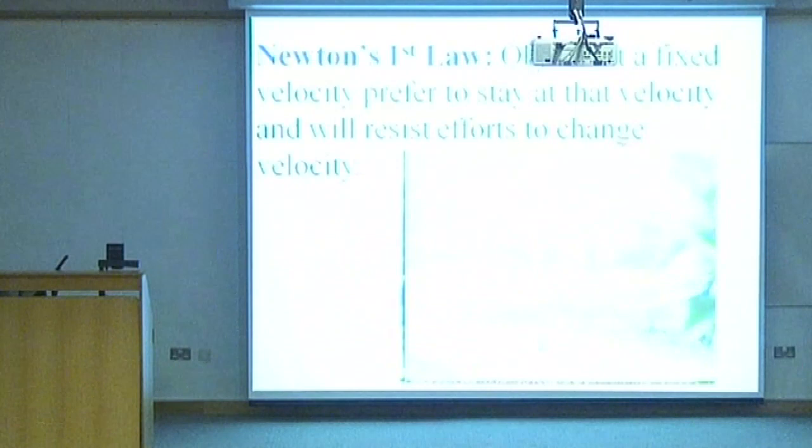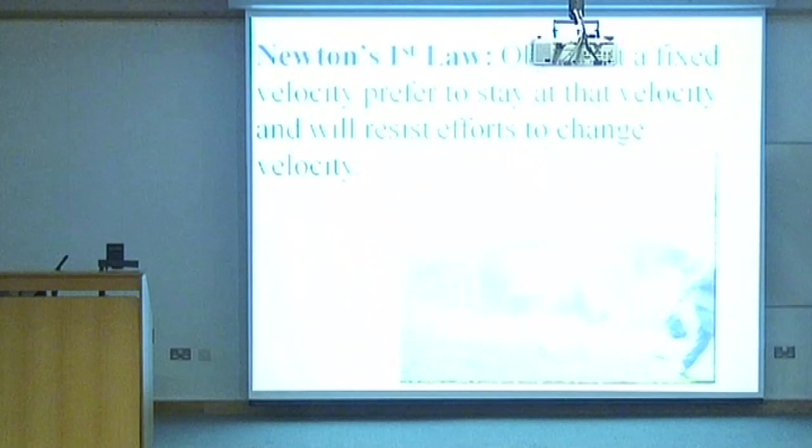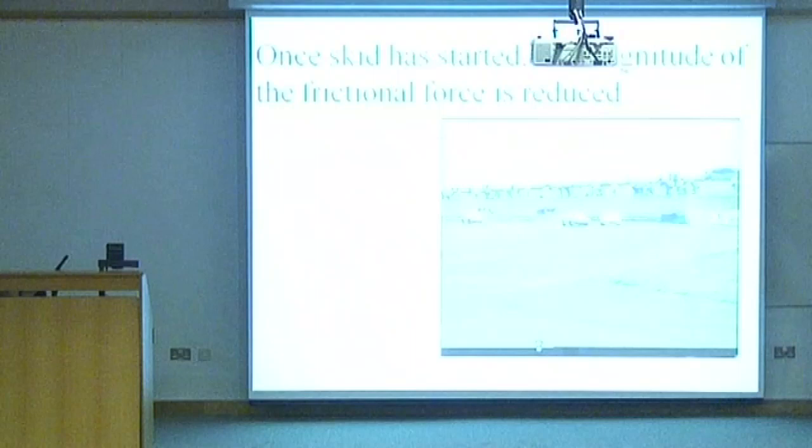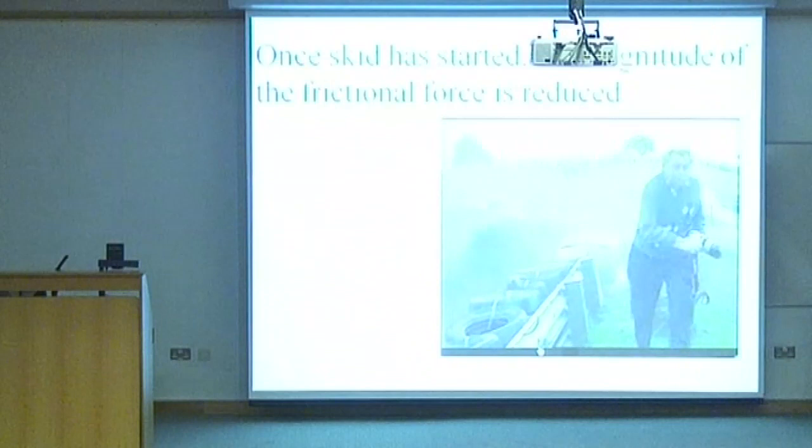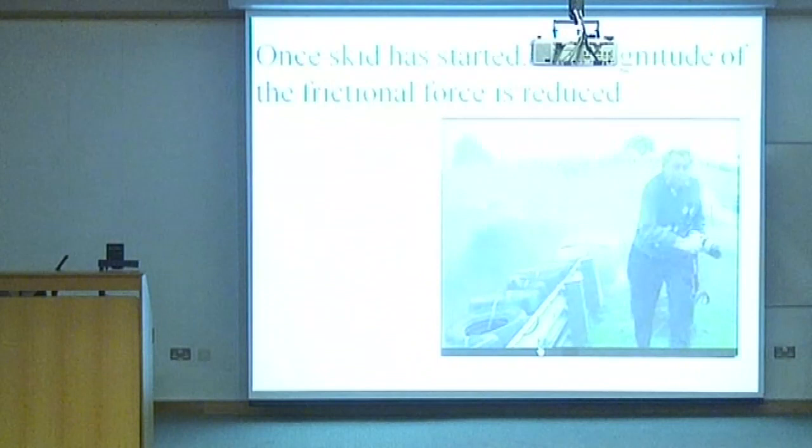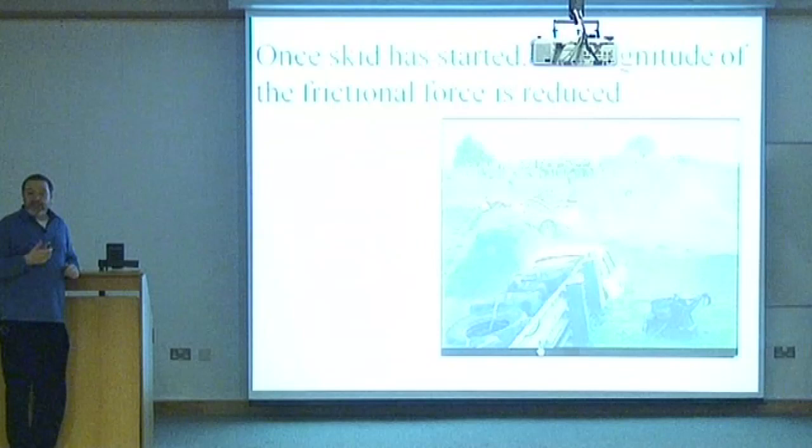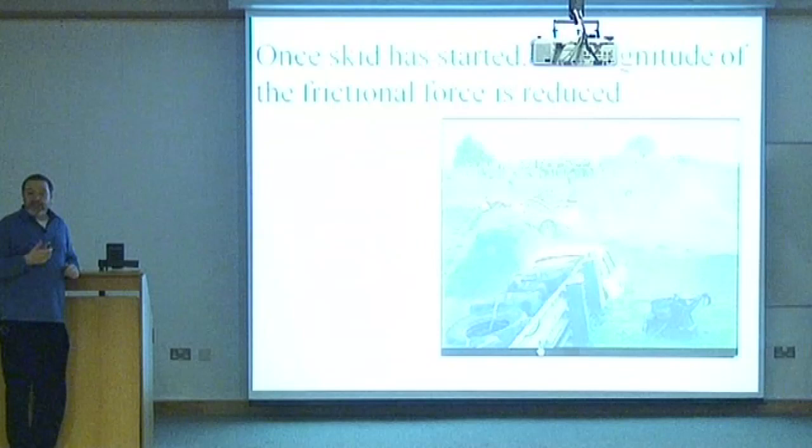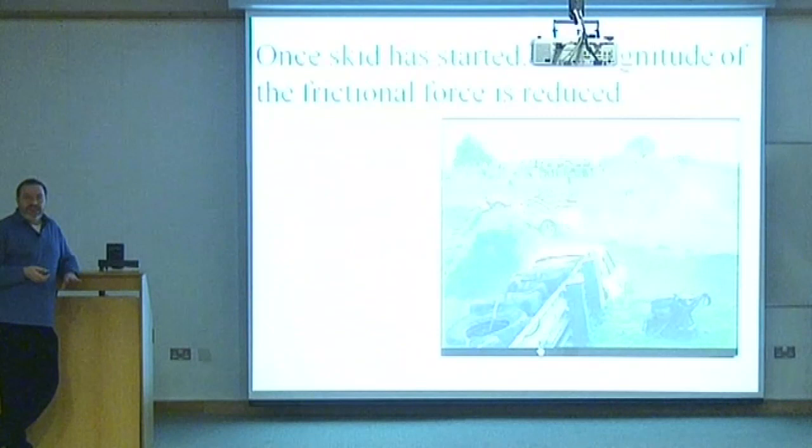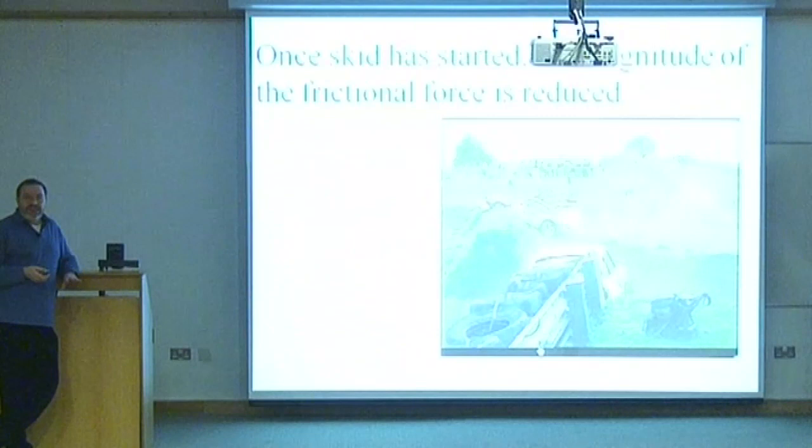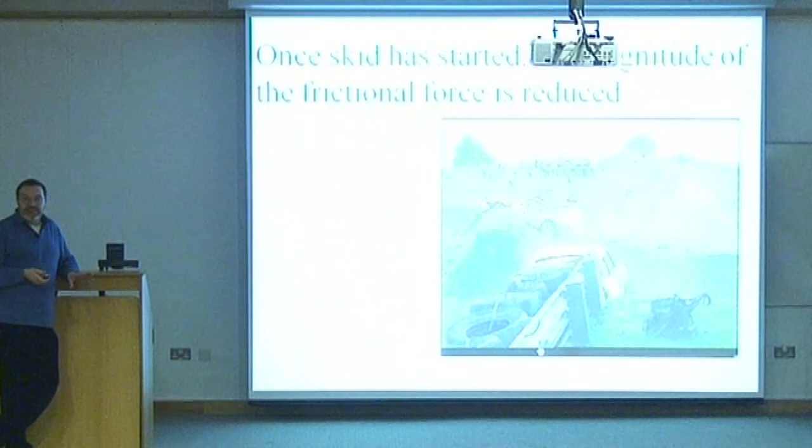Here comes the car. Now, with a skid it's a funny thing because you're relying on frictional forces to keep you on the road, a particular type of friction called static friction. Even though the wheels are going round, it's static friction. But then if you start to skid, it changes the frictional force to a thing called kinetic friction. And the kinetic friction is always less than the static friction.